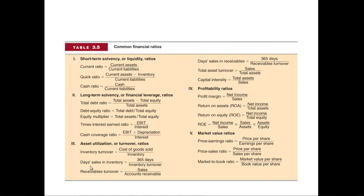Perhaps an easier measure to think about is days sales in inventory. You take 365 days divided by inventory turnover, and that tells you how many days inventory is sitting in your warehouse. If you had inventory turnover of one, it's sitting there for 365 days. If you had inventory turnover of two, it's sitting there for about 180 to 182 days. You can also look at receivables turnover — how quickly is your money coming in, and how long do you have to wait to get paid?